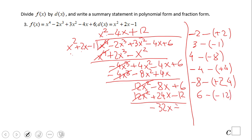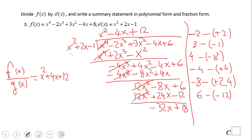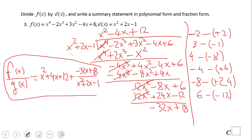So f of x over q of x equals x squared minus 4x plus 12, plus the remainder negative 32x plus 18, over x squared plus 2x minus 1. This is the final answer for number 3. Pause this video clip and try the next one.